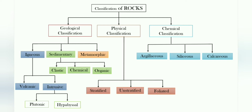Physically, rocks are classified by three types: stratified, unstratified and foliated. And chemically, rocks are classified by three types: argillaceous, siliceous and calcareous.